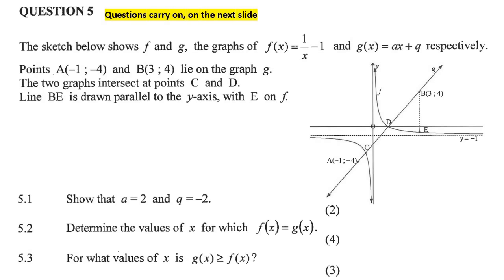So here we have graphs f and g. So f is a hyperbola, and g is a straight line. Point A, B, and so on, the two graphs intersect, and line BE is drawn parallel to the y-axis. Okay, that's fine.